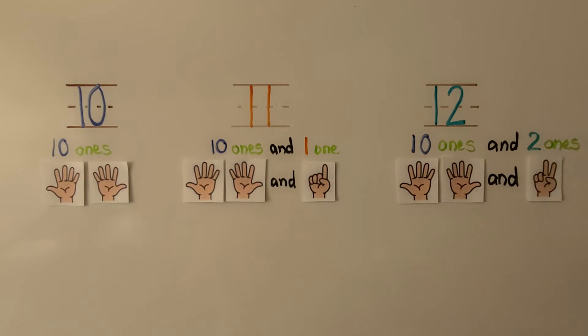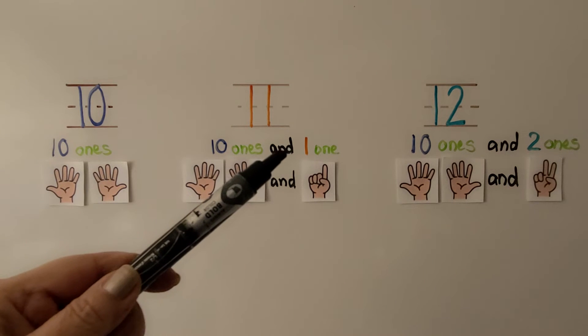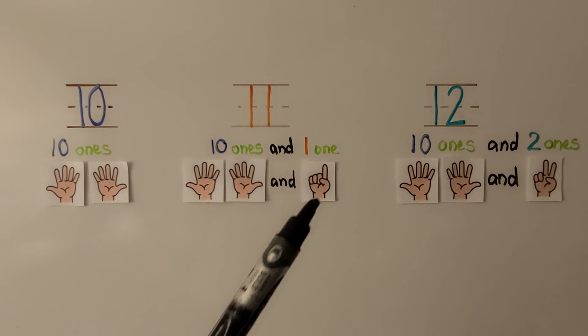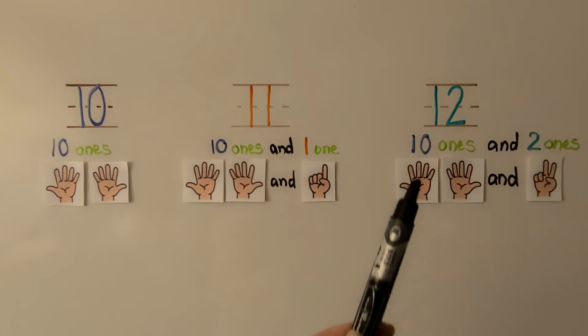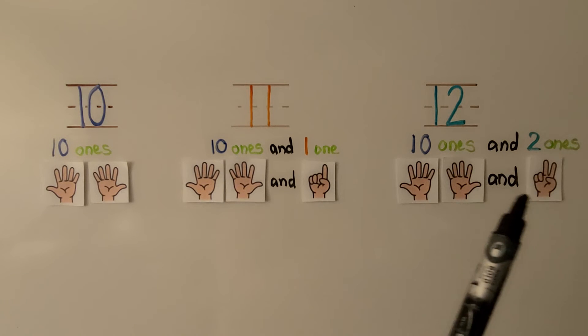When we have 10 ones and one more, we have 11 ones. We have 10 and one more. When we have 10 ones and two more, we have 12 ones.